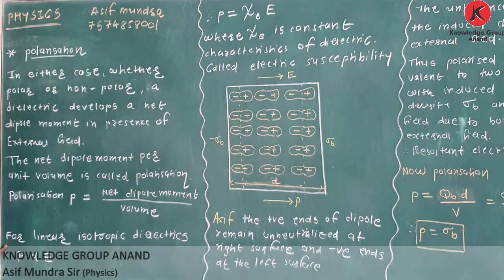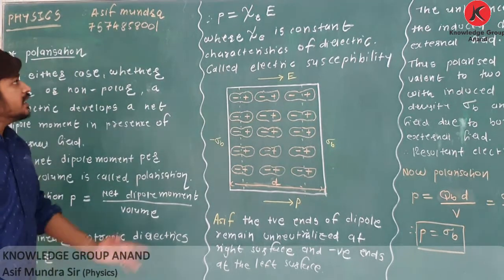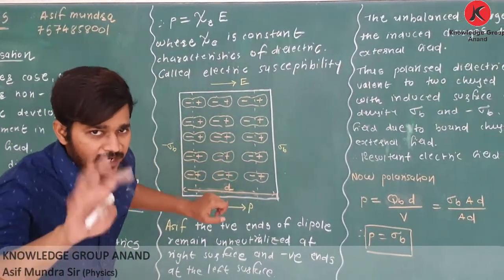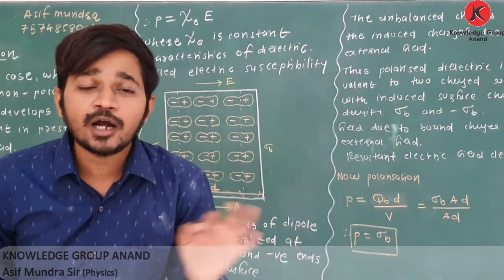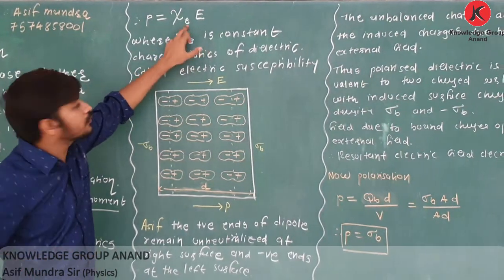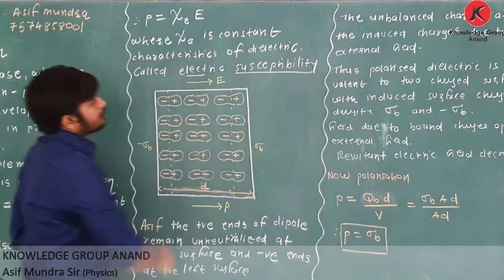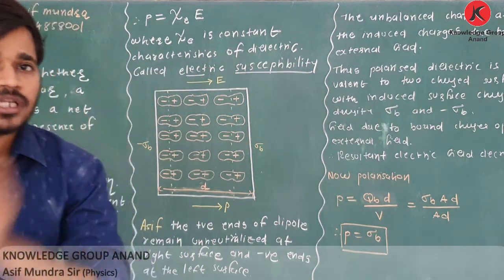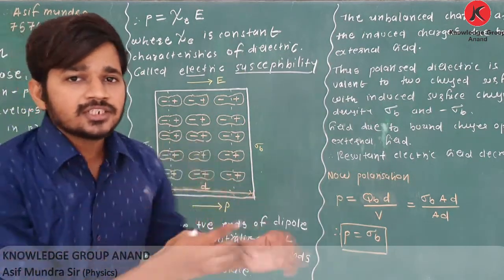For linear isotropic dielectrics, we know that P is proportional to E — meaning this polarization depends on the external electric field. If we remove the proportionality, we add a constant, and it is P = χe · E. The symbol χe is called electric susceptibility. It is a constant characteristic of the dielectric. As the medium changes, its electric susceptibility changes.